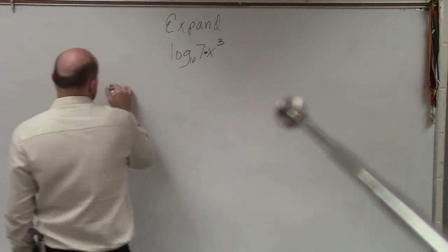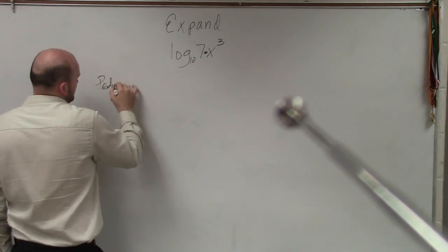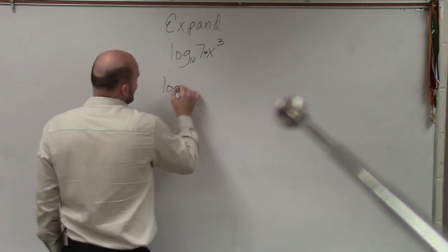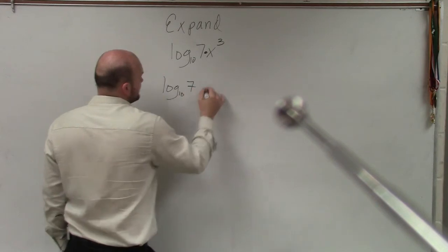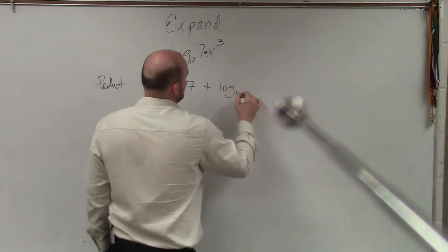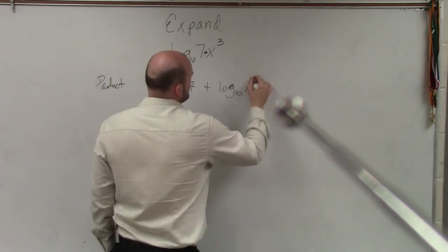So therefore, by using the product rule, first thing I'll do is I'll rewrite this as log base 10 of 7 plus log base 10 of x cubed.